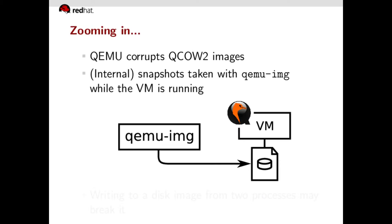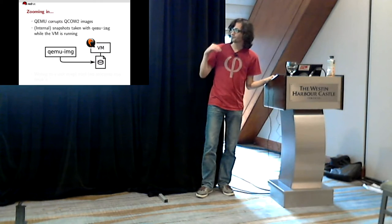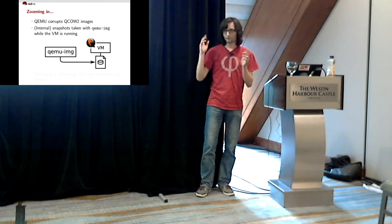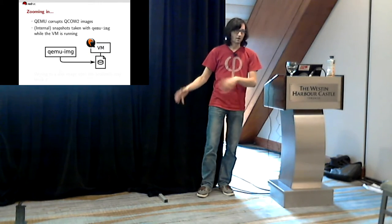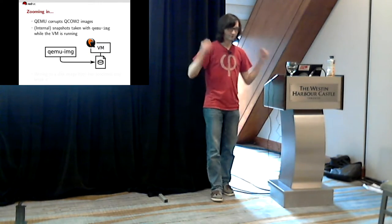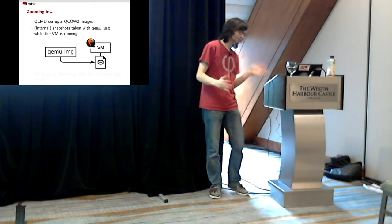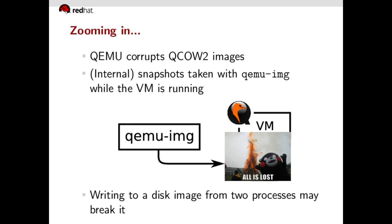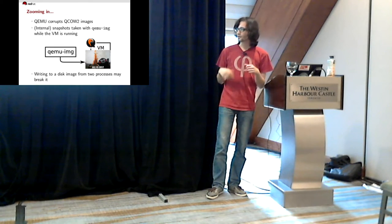This is always bad because it means people have lost all their valuable data. But zooming in further, we found it's not really QEMU's issue — the people who reported the bugs were doing something wrong. They took internal snapshots using the QEMU IMG tool on a QCOW2 image while the virtual machine was running, which is a bit like going on the highway at 100 km/h without brakes and deciding to use the handbrake. In general, you should never write to a disk image from two processes at the same time.